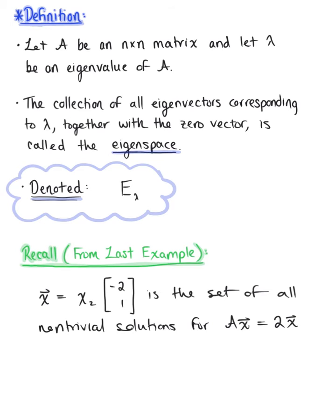So now using the definition of our eigenspace, we can conclude that this is equivalent to saying we have the eigenspace E sub 2 being equal to the set of all scalar multiples t multiplied by the vector negative 2, 1. Alternatively, we could also say that this is equal to the span of the set of vectors negative 2, 1.